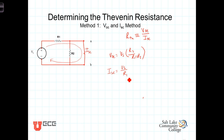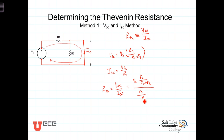Using Method 1, R Thevenin equals V open circuit divided by I short circuit, which is V_S times R2 over R1 plus R2, divided by V_S over R1. The V_S terms cancel, and inverting and multiplying gives R Thevenin equals R1 times R2 over R1 plus R2. Method 1 always works when you have an independent source in the circuit, and involves finding Voc and Isc using any circuit analysis methods, then forming their ratio.